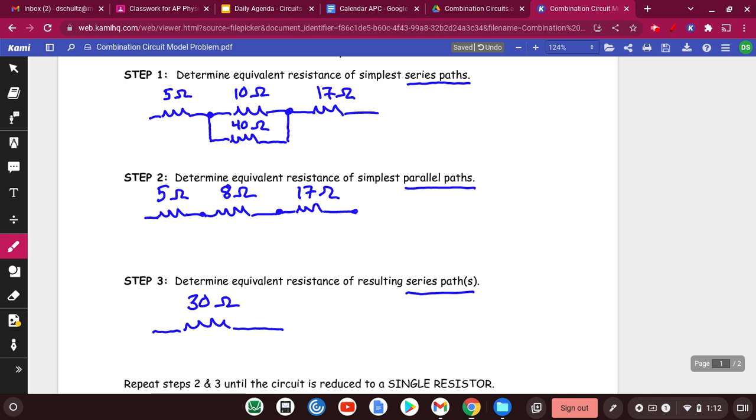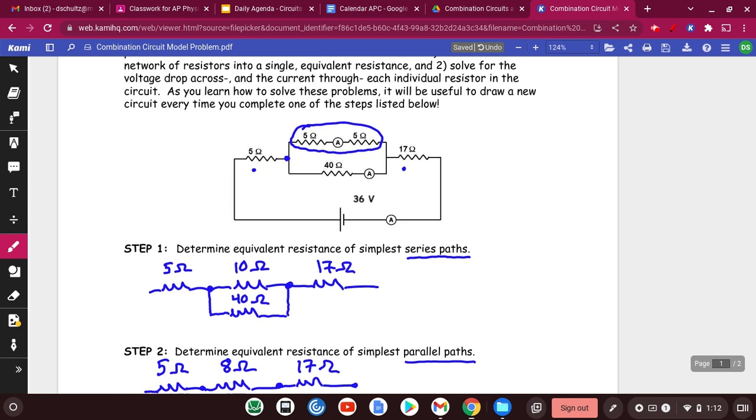And by the way, this 30 ohms is my total resistance for the circuit. Sometimes it's called equivalent resistance. That's like you've just reduced all that stuff that was up here into something that is pretty simple, which is nice.